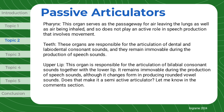The teeth are responsible for the articulation of dental and labiodental consonant sounds, and they remain immovable during the production of speech sounds. The upper lip is responsible for the articulation of bilabial consonant sounds together with the lower lip. It remains immovable during the production of speech sounds, although it changes form in producing rounded vowel sounds.